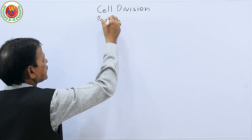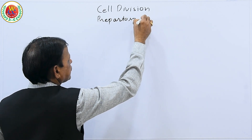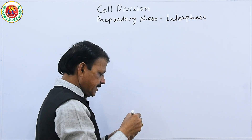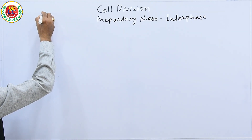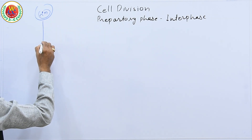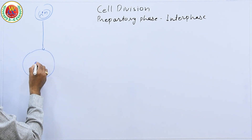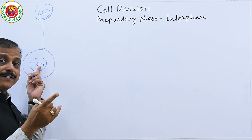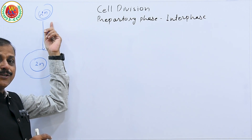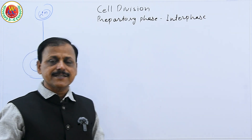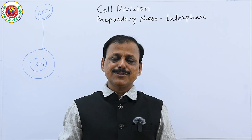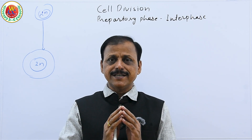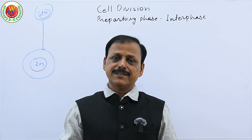Under cell division, we will learn about the preparatory phase, also known as interphase. For a cell to undergo cell division, it must enlarge in size with a prominent nucleus and dense cytoplasm. A prominent nucleus means the nuclear material must double so it can be represented in each newly produced daughter cell, along with proteins, RNA, and other organelles — all cytoplasmic content must also double.